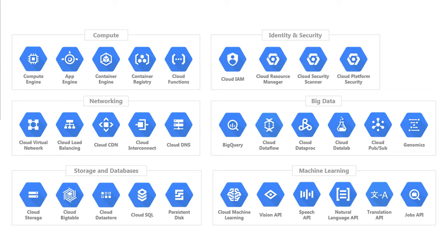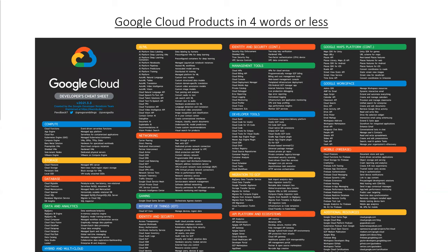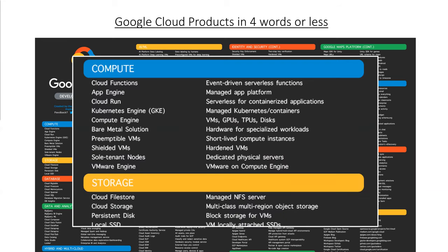This next slide shows all of Google Cloud's products — it's called 'GCP in four words or less.' For example, under Compute, Cloud Functions is described as 'event-driven serverless functions,' App Engine is 'the managed app platform,' and Cloud Run is 'serverless for containerized applications.' There are many products here, so I encourage you to explore that page. We'll look at some of them today.